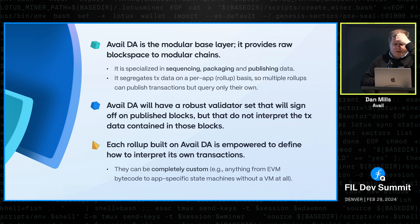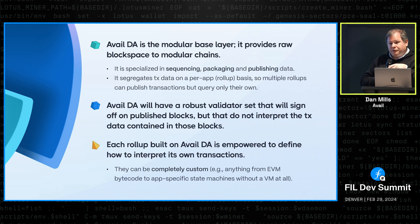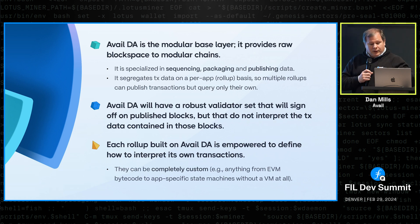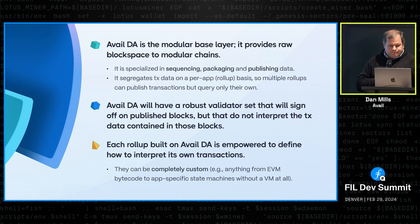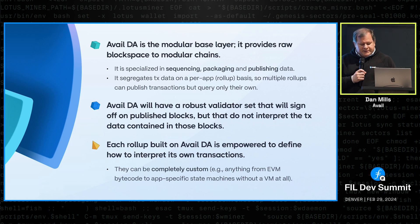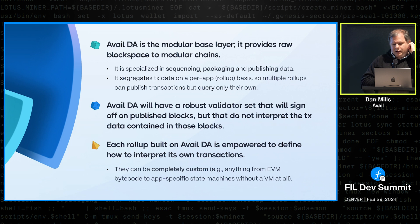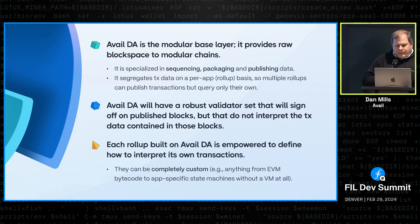Avail has a pretty robust validator set. Avail is based on Substrate, which is the Polkadot SDK, and it has support for 1,000 validators. We can even go beyond that by switching the signature scheme — at some point we'll likely switch to BLS, which will enable even more validators.